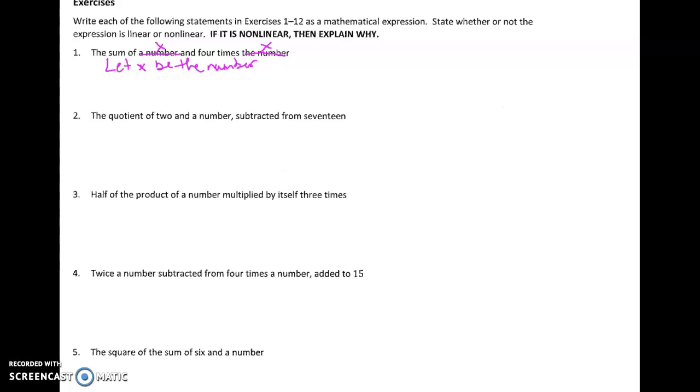I know sum means to add, and the and sign tells me where I'm putting the plus sign. So I'm going to take a number, plus sign, 4 times the number. Yes, I know we can simplify that. We can add like terms. That's not what we're doing right here. We're just writing each of the following statements as mathematical expressions. Now, I have to say if it's linear or nonlinear. You look at the variables. Notice these are both to the first power, so we'd say it's linear.